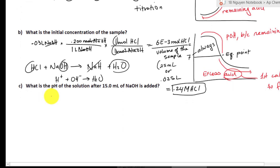The next part asks: what is the pH? We have to find the initial concentration first before we can do anything. For any type of titration problem, we have to use the equivalence point to solve for the concentration of the acid or the base from the sample before we can solve any pH for any particular volume. Keep that in mind.